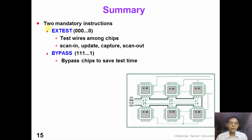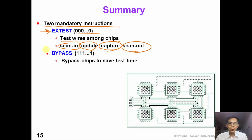In summary, in this video we have introduced two mandatory instructions. The external test instruction has all-zero instruction code and tests the interconnect wire between chips. We need to scan in our test data, update the scan register, capture the response, and then shift out. The bypass instruction provides a shortcut that bypasses the chip, which can save our total test time. Thank you for watching.